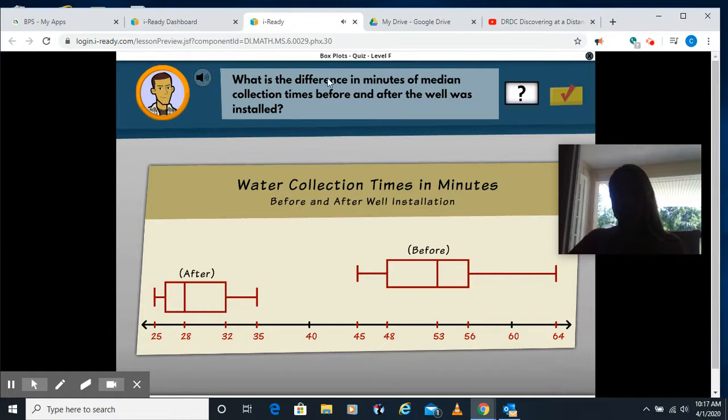Okay, we're looking at the difference, so subtraction problem again, and the minutes for the median, which is where this line is going to be. This line here on our box plot indicates where the median is, so our median here is 53, minus our median here is 28, if I did 53 minus 28, then I would get 25.